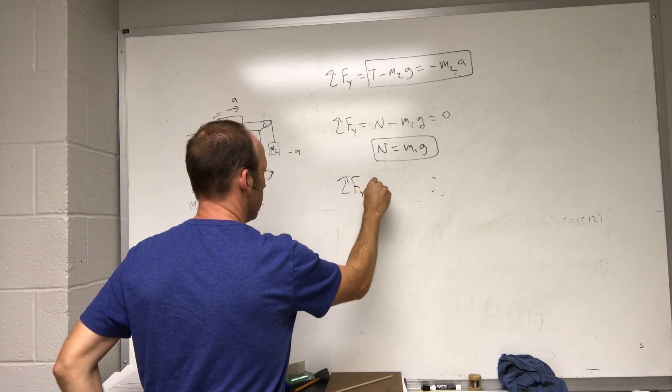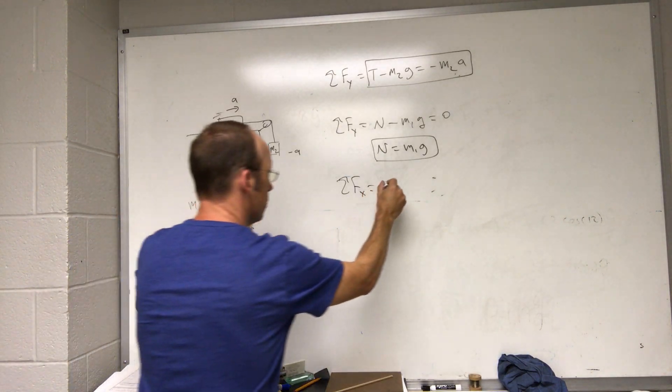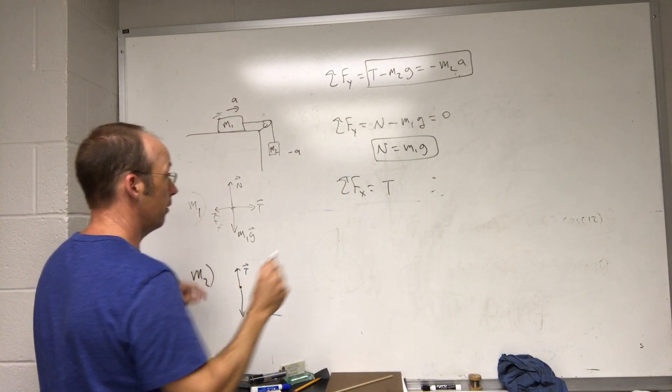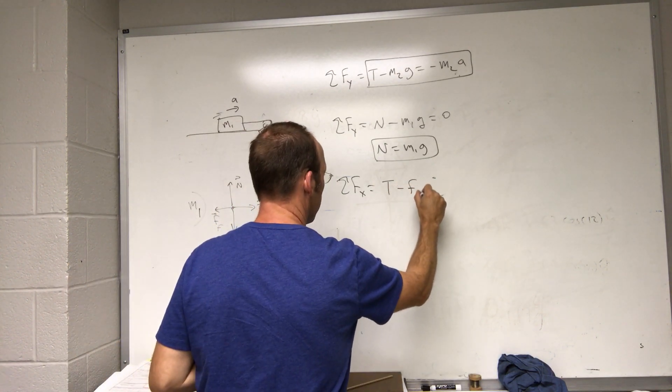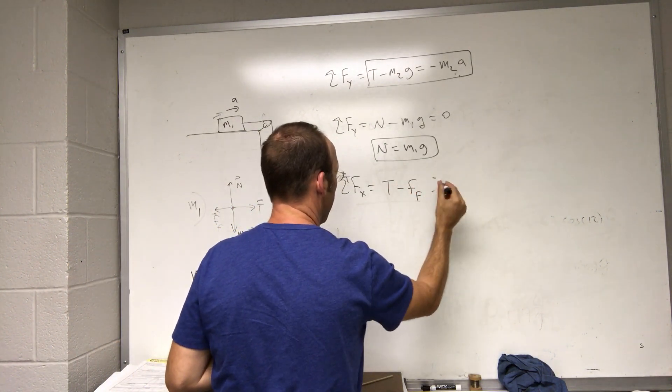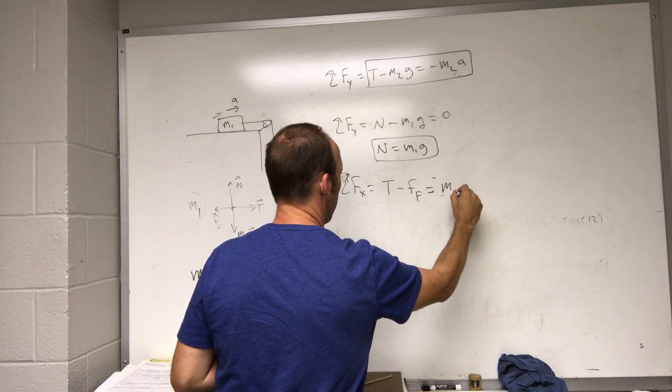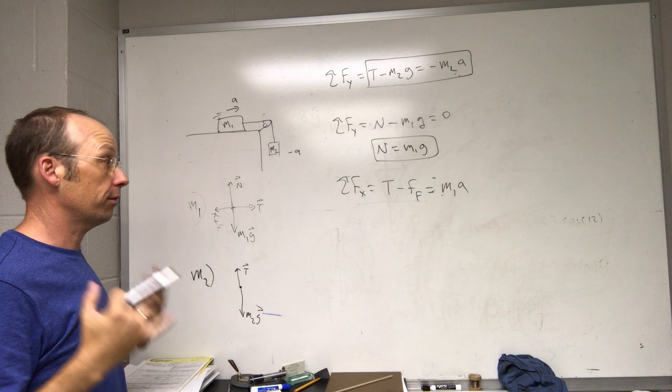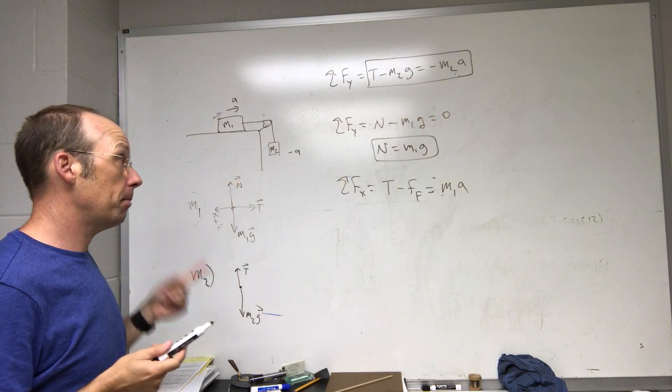Finally, I'm going to do the same thing in the x direction. Now here I have the tension, which is the same value as up there, and minus the friction force, and then that's going to be equal to m1 a.